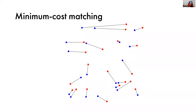Let me raise the question of how to compute this quickly. There are fast algorithms for computing such a matching, but it might sound tricky — you're optimizing over the set of all permutations. Naively you'd need to enumerate all n-factorial permutations, but in fact there are much faster algorithms for computing such a minimum cost matching, and we will see them later.